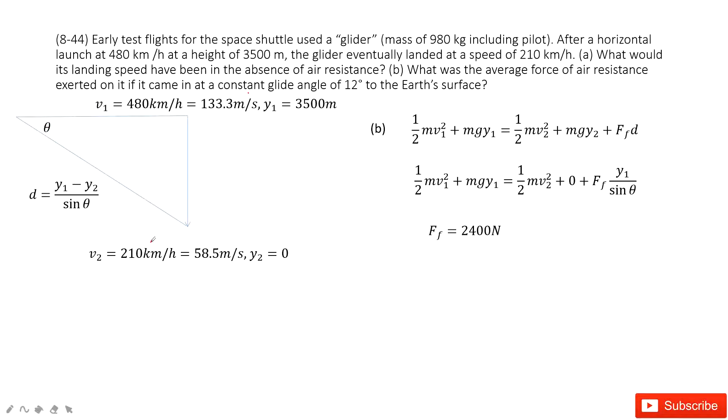And also, it eventually lands at a speed 210 km per hour. So that means velocity v2 is also given. v2 is given. So we can convert it to unit meter per second.